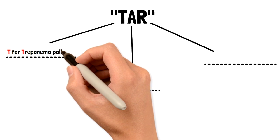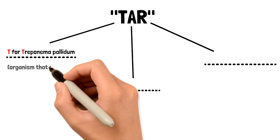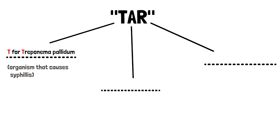First off, we have T. T is for Treponema pallidum, which is the organism that causes syphilis. This rash is seen in syphilis, specifically in stage 2 syphilis. I also want to add that this organism is a spirochete.